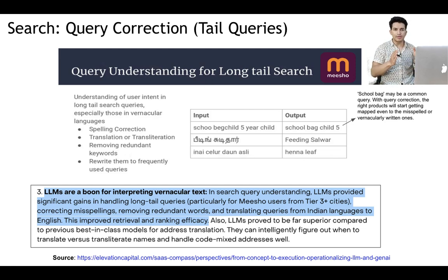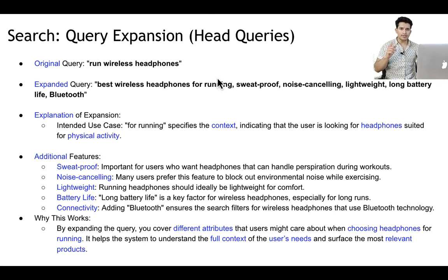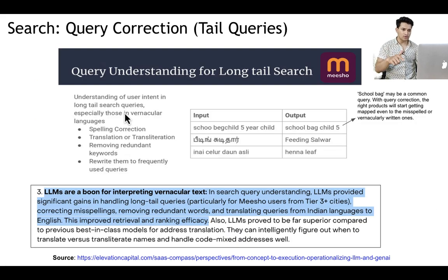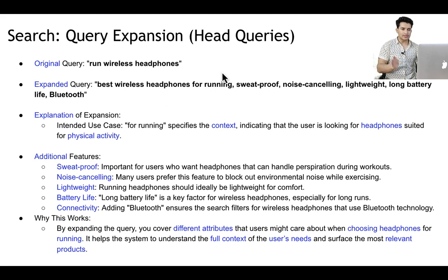Now I'll talk about how companies productionize such use cases when using LLMs, because LLMs have a slow inference rate and can't be used in real time. For tail queries — misspelled or vernacular — we do query correction or proper understanding with LLMs. For head queries, companies do query expansion. For example, the query 'running wireless headphone' can be extended to 'best wireless headphone for running, sweat proof, noise cancellation, lightweight, long battery life, Bluetooth.' Expanding this query helps in recognizing the right keywords so the right products come up.